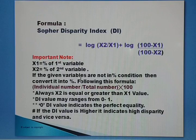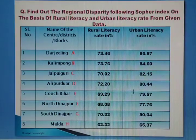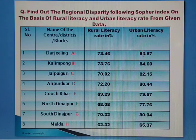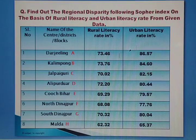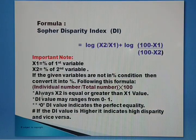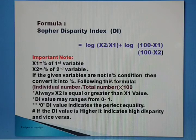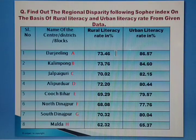How do we distinguish x1 and x2? Looking at the given question, we have rural literacy rate and urban literacy rate. Since the rural literacy rate values are lesser than the urban literacy rate, those rural values are considered as x1 and the urban values as x2. Always x2 value is equal to or greater than x1.